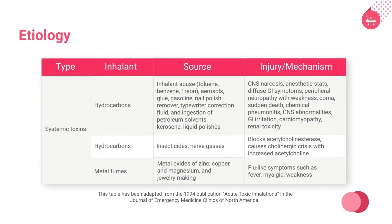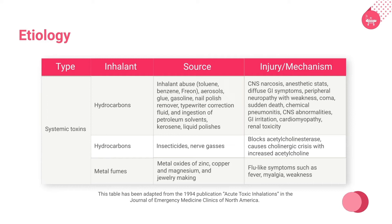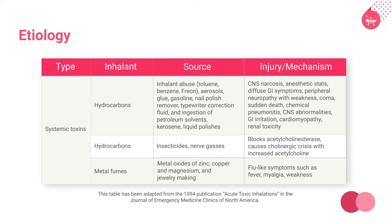Systemic toxins are absorbed through the respiratory tract and then damage other organ systems. These toxins include hydrocarbons, organophosphates, and fumes from metals. Hydrocarbons may cause CNS narcosis, complications during anesthesia, diffuse gastrointestinal symptoms, peripheral neuropathy with weakness, coma, sudden death, chemical pneumonitis, CNS abnormalities, GI irritation, cardiomyopathy, and renal toxicity.